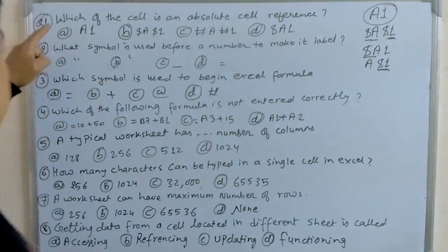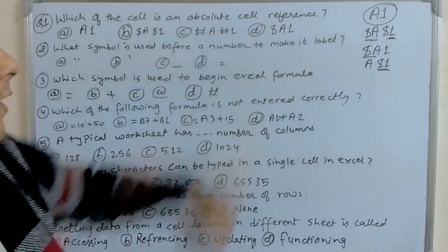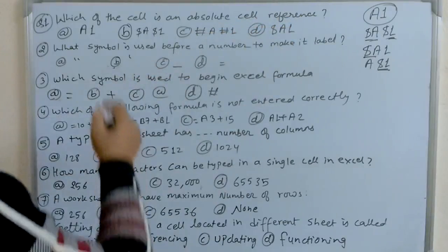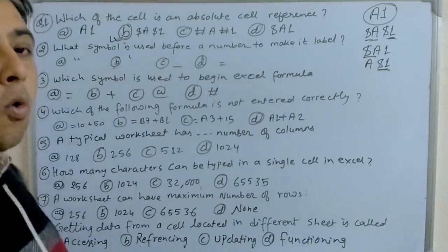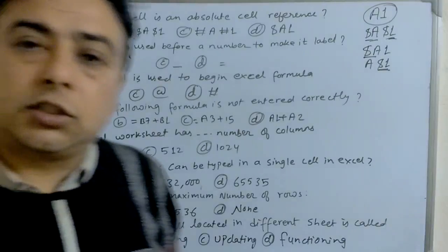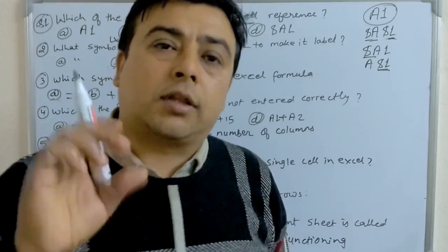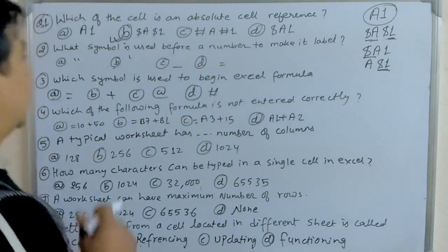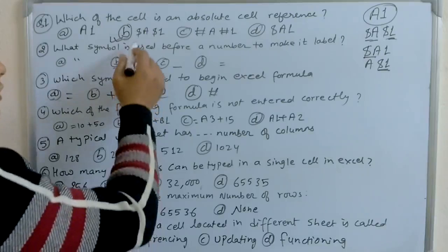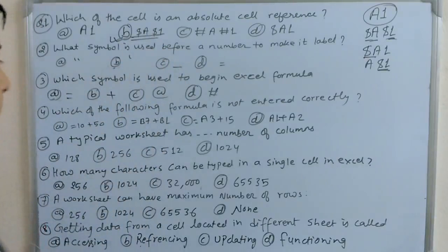So the question is asking which cell is an absolute cell reference. Absolute cell reference means both column and row have the dollar sign. That is known as absolute cell. That's why B is the answer.